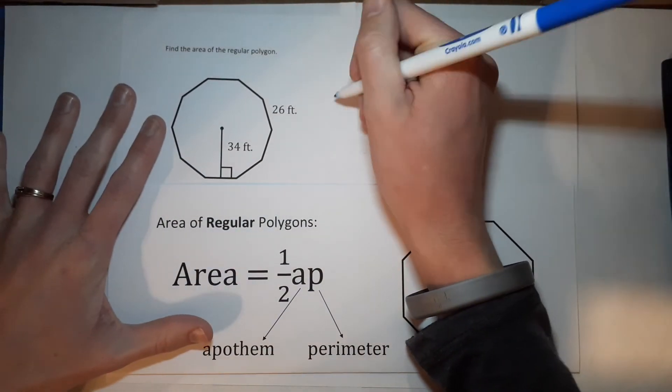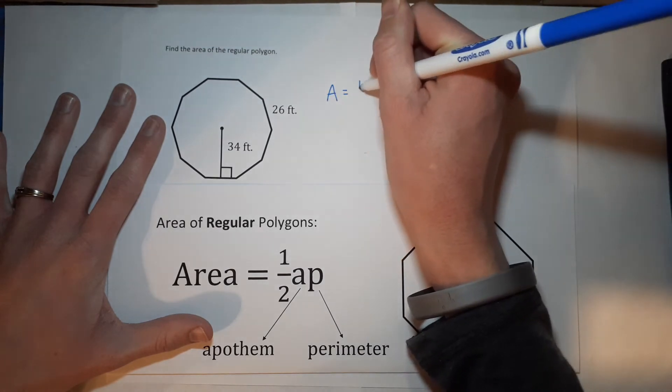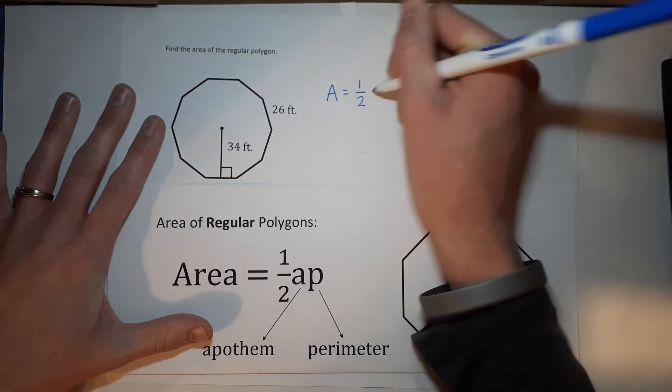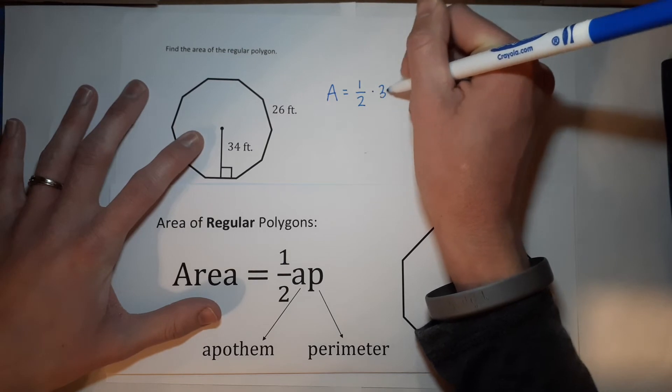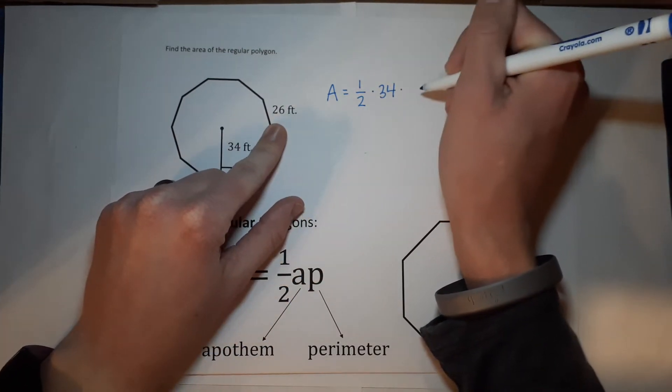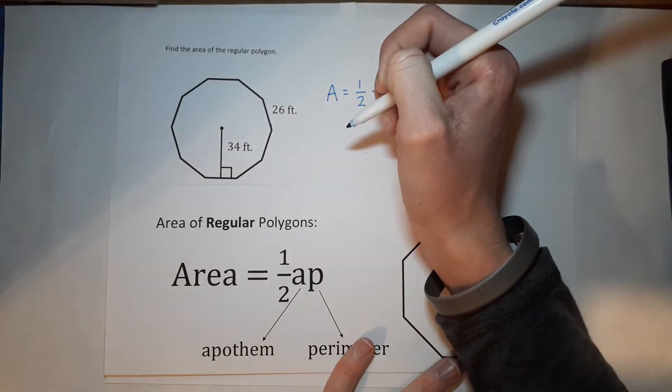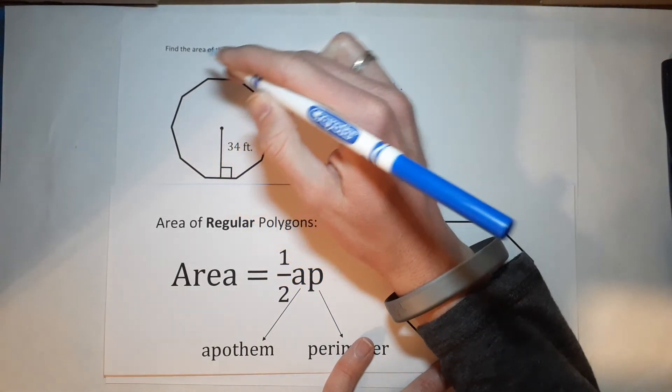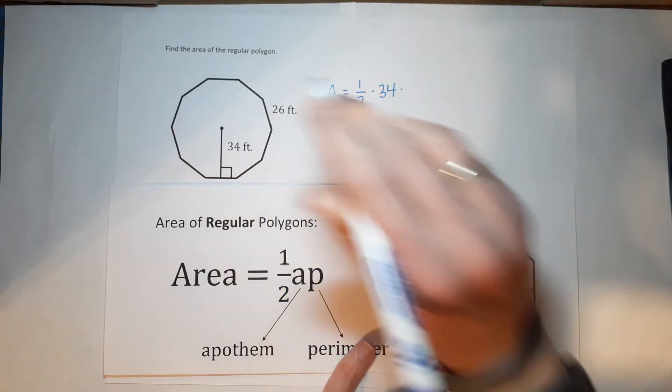So we've got my area equals one half times my apothem, which is 34, times the perimeter. You might be tempted to just write 26 here, but 26 is only one side. And I need the whole perimeter like I'm putting a fence around it.